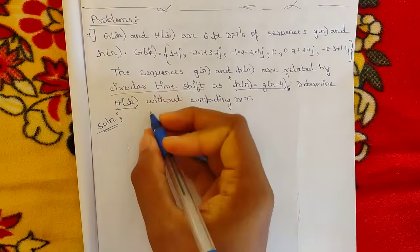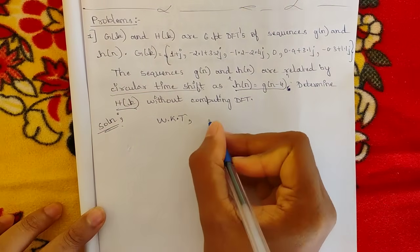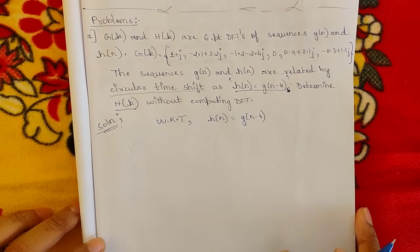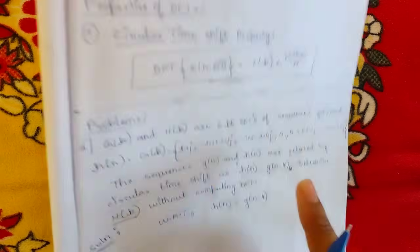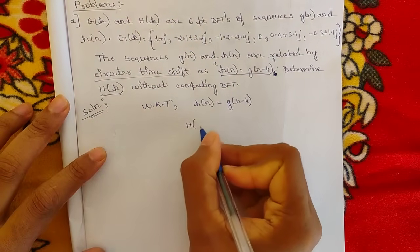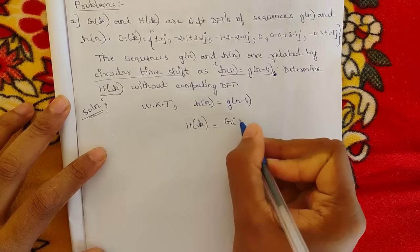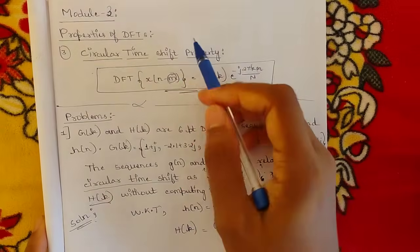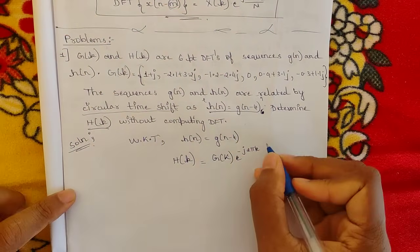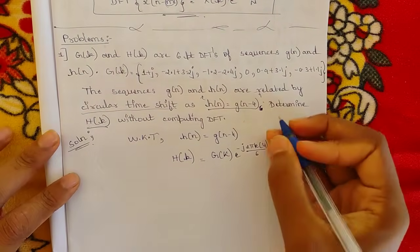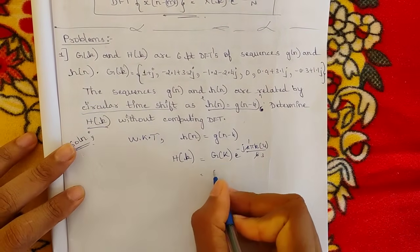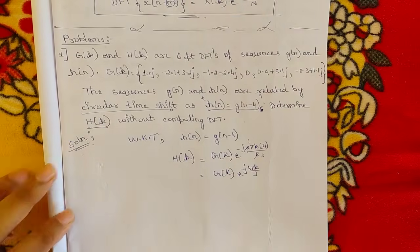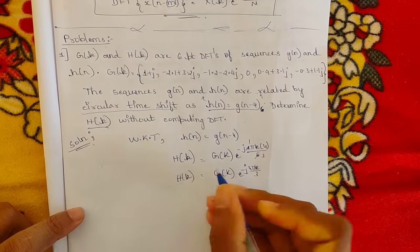Let us write the data. We know h(n) = g(n−4). Applying the circular time shift property, H(k) = G(k) · e^(−j2πkm/N). In place of m we have 4, and N is 6, so this simplifies to H(k) = G(k) · e^(−j4πk/3). This is the working equation we will use to find each term.